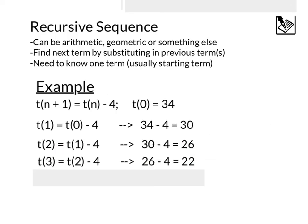t(3), we would do the same thing. We have 26. We plug that in for t(2). That's 26 minus 4, which is 22. t(4), same thing. We take that 22, substitute it in for the t(3), the previous term. 22 minus 4 is 18.